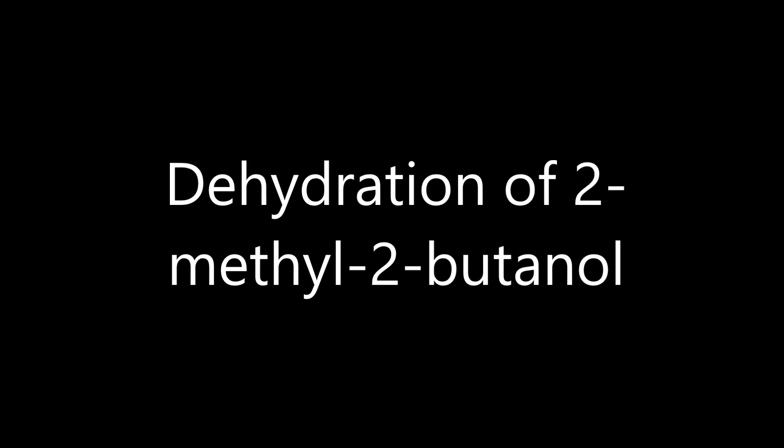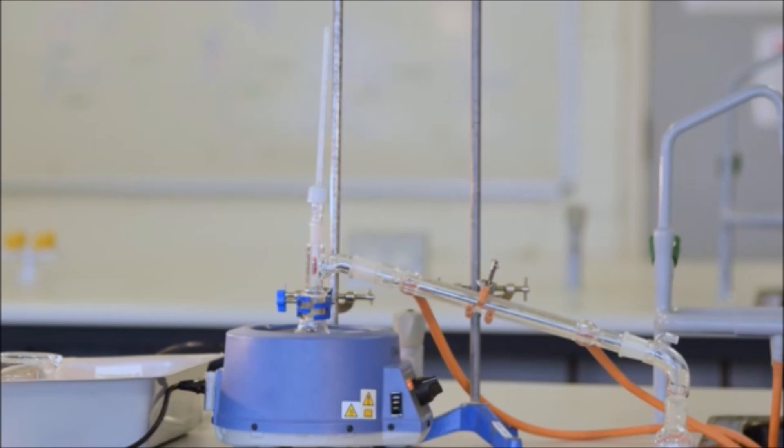Okay, so today we're going to perform the dehydration of 2-methyl-2-butanol to give 2-methyl-2-butene. To do that, we're going to have to distill the product from the starting material. So, we're going to set up a distillation.